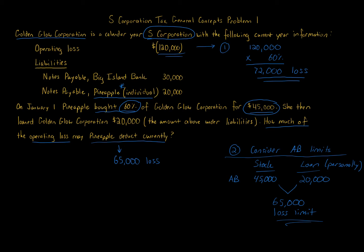There are other loss limitations, but basis is the big one, especially since it differs between S corporations and partnerships. The remaining $7,000 of loss — that is, $72,000 minus $65,000 — gets carried over to next year, where we look at the basis of the stock and loan again and determine if it can be taken then. It continues carrying over each year until Pineapple no longer has an ownership interest.